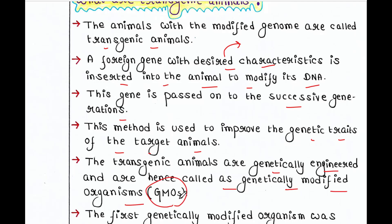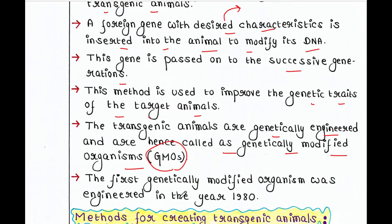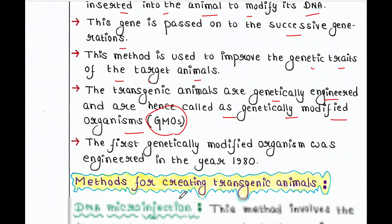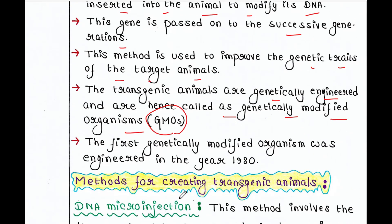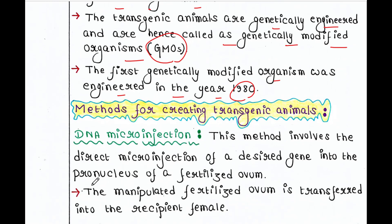The first transgenic animal, or first genetically modified organism, was engineered in the year 1980. Let's see some methods for creating transgenic animals. The first one is DNA micro injection.